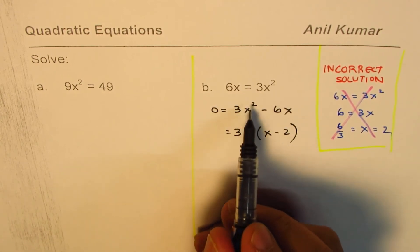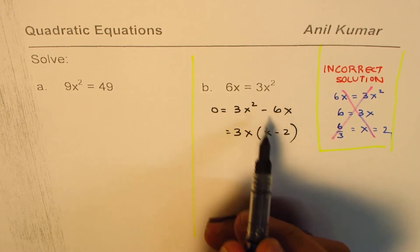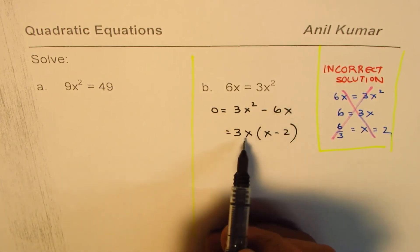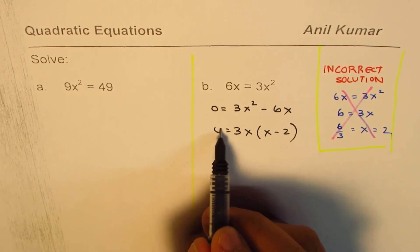How do you get that? 3x squared divided by 3x is x. 6x with a negative sign, negative here, 6 divided by 3 is 2, and x divided by x is 1. So we get x minus 2 equals to 0.